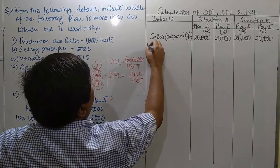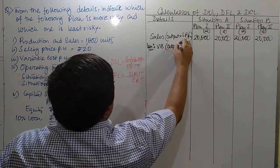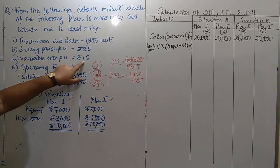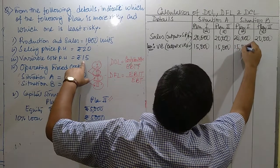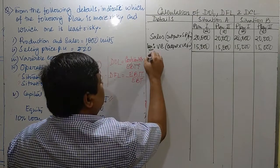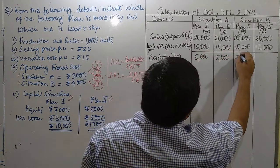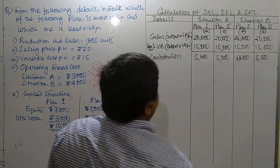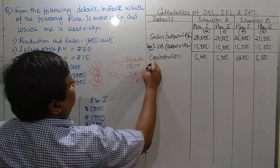Next, variable cost — from sales we should deduct variable cost. Variable cost is output multiplied by variable cost per unit: 1000 into 15 equals Rs. 15,000 in each and every column. Once we deduct variable cost from sales, the difference we get is known as contribution. In every column we are getting the same contribution of Rs. 5,000.